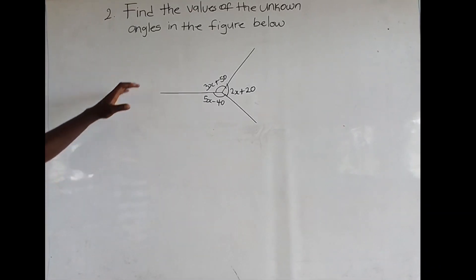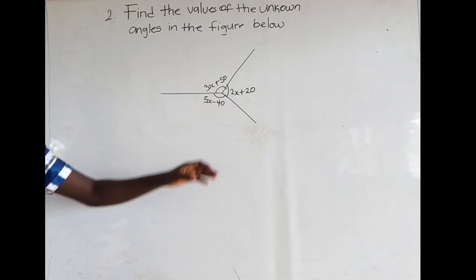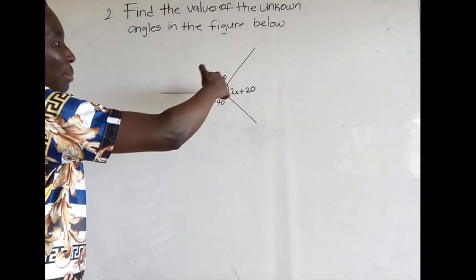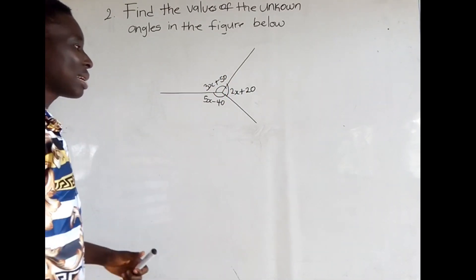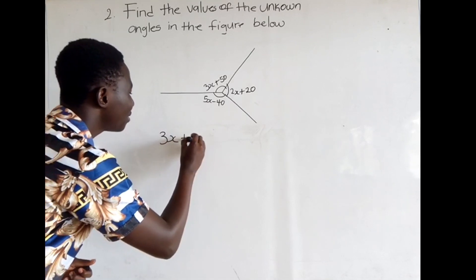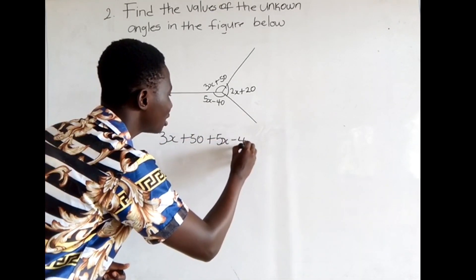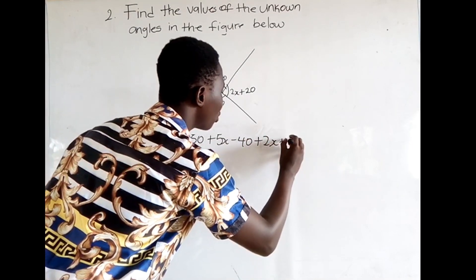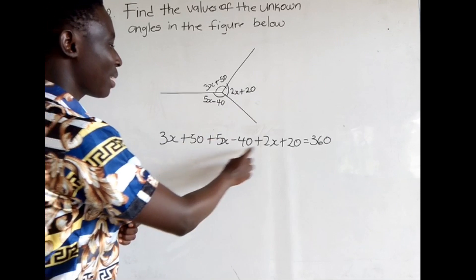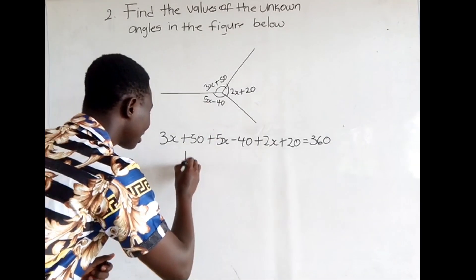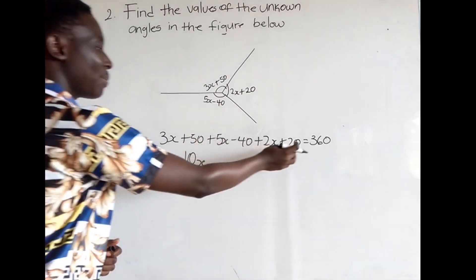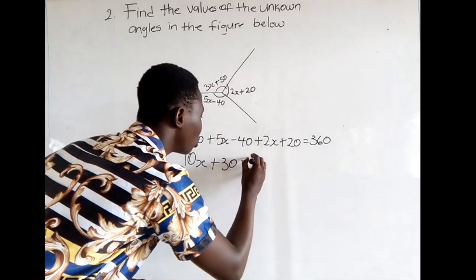Find the values of the unknown angles in the figure below. Looking at this figure, we can see that the angles are around a point, and angles around a point sum up to 360. So we get: 3x plus 50, plus 5x minus 40, plus 2x plus 20 is equal to 360. Combining the x terms: 3x plus 5x plus 2x gives us 10x.